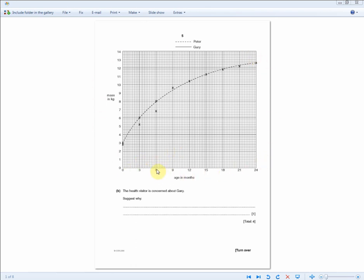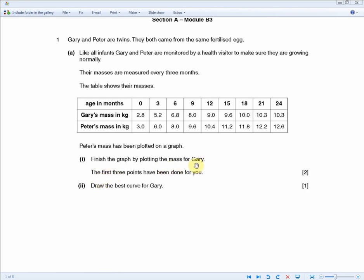So for two marks, let's see what graph you need to plot. Just your normal standard graph. Intervals are already going up in three months along the x-axis and the y-axis is mass in kg. So if we return back to the exam question. So to finish off Gary's, because we know it goes up in three, six, nine, 12, going up in three month intervals.